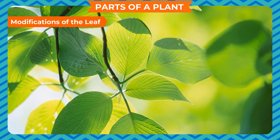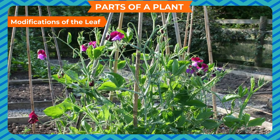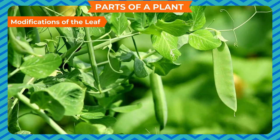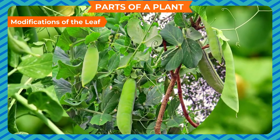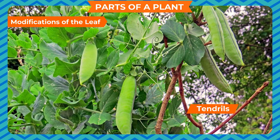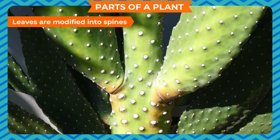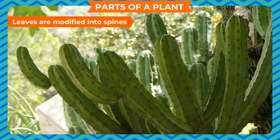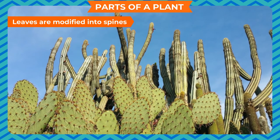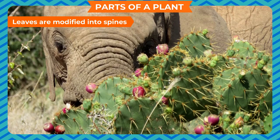Leaves are also modified for various purposes. In sweet pea and garden pea, some leaves are modified into thin coiled thread-like tendrils to help the plant climb. In cactus, leaves are modified into spines — these spines check the loss of water from the plant and also protect it from being eaten by grazing animals.